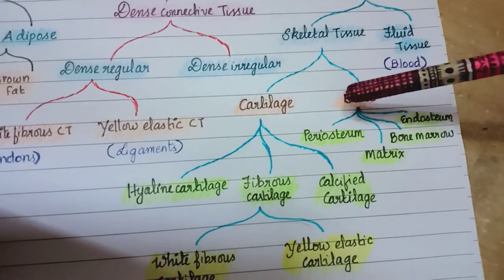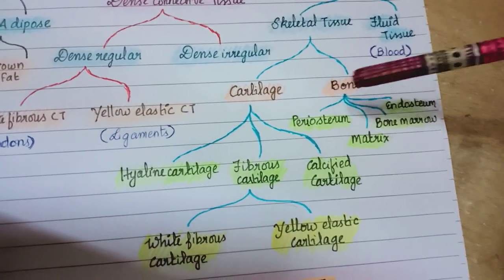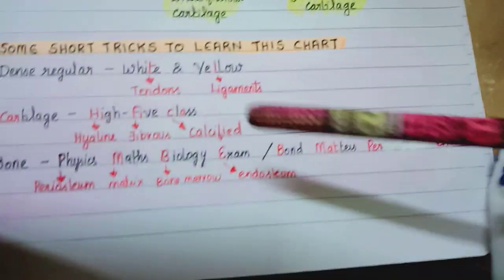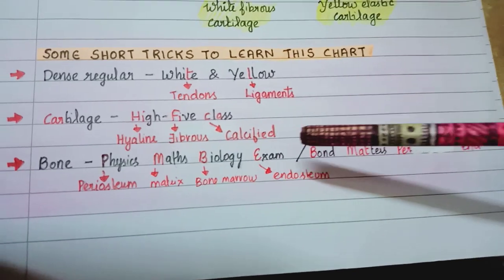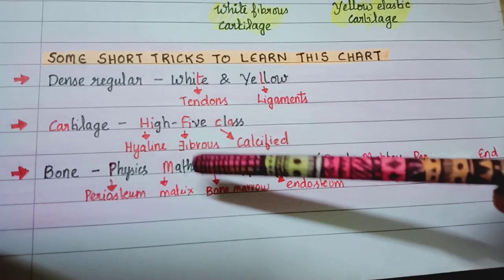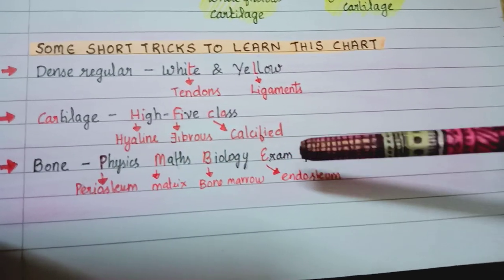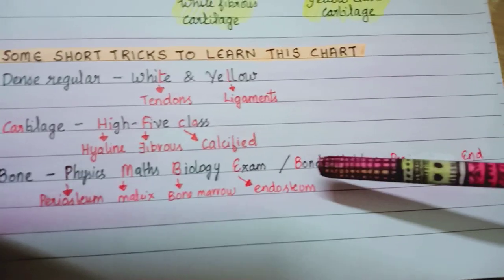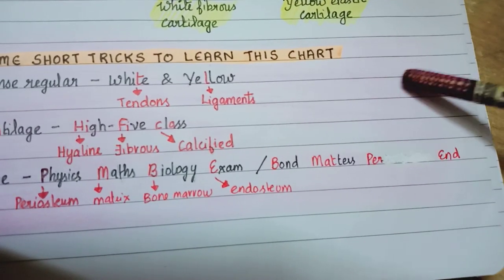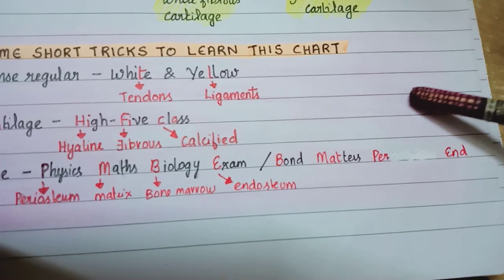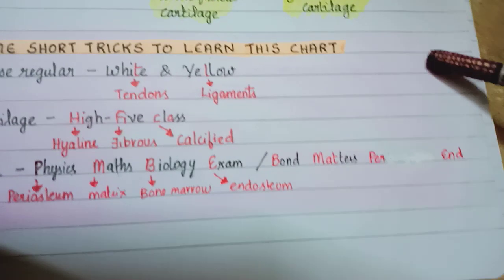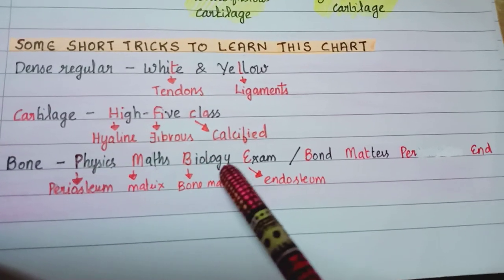Bone consists of periosteum, matrix, bone marrow, and endosteum. An easy trick to learn this is: Physics Max Biology Exam. Phi-phi for periosteum, Max for matrix, Biology for bone marrow, Exam for endosteum. There is another trick: Bond Matters Per N, where bond matters means bone marrow. But Physics Max Biology Exam is easier.